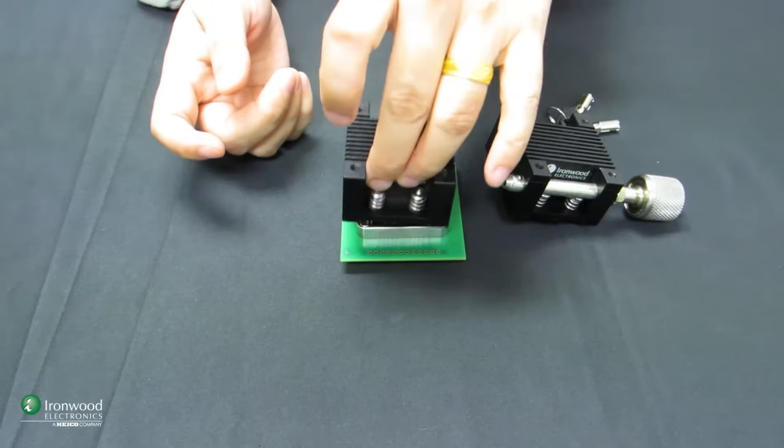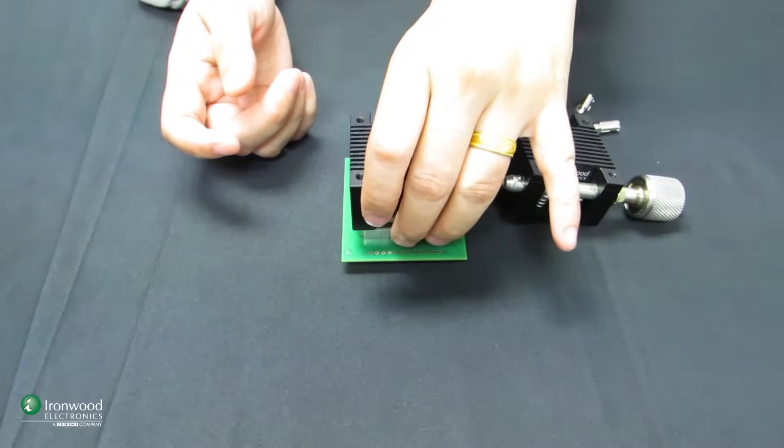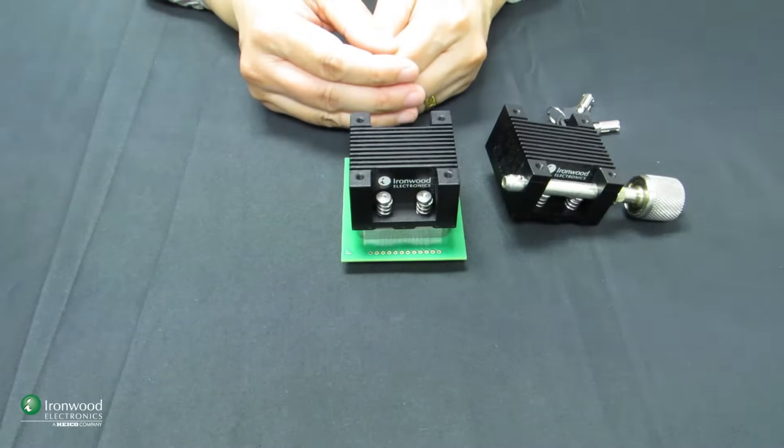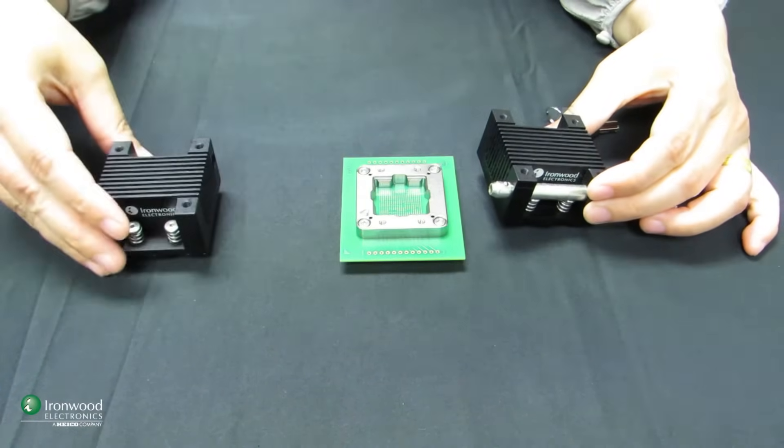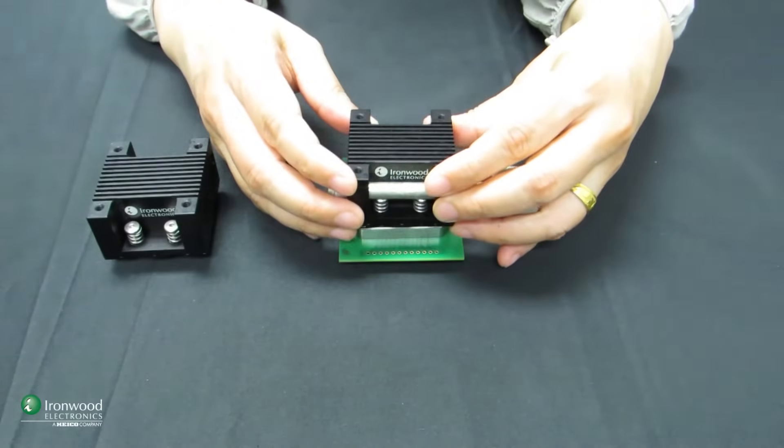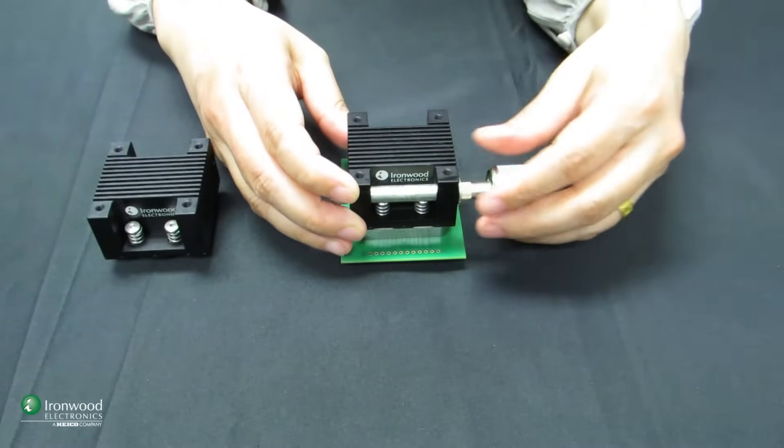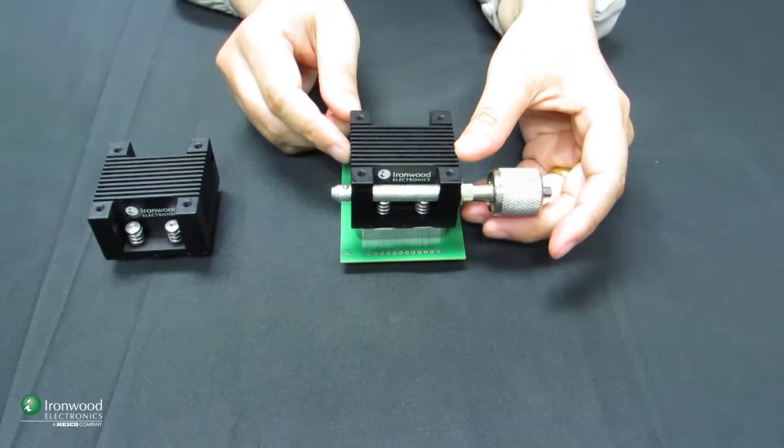They can dissipate the heat really well once the heat sink is applied. Then the lock pin's purpose is not only to secure the heat sink on top, but it will provide more security once you're using the lock pin.